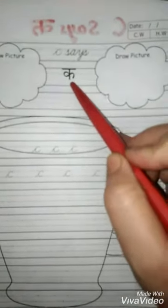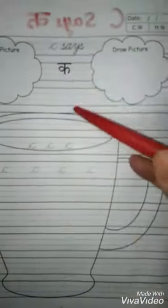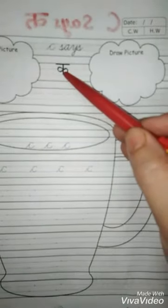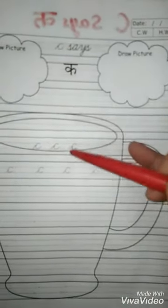C says K. C says K. When we will read cup, then the sound will come of C. K. C says K.